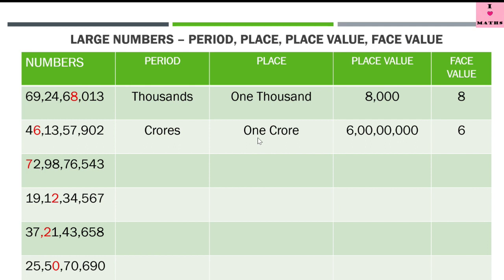The period is crore, the place is 1 crore, place value is 6 crore, and the face value is 6 itself. Now let us read the third number: 72 crore 98 lakh 76 thousand 543. We have to find out the period of 7. Since it is 72 crore, 7 is in the crore's period. The place of 7 is 10 crore because it is 72 crore, so 7 is lying at 10 crore's place.